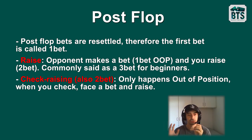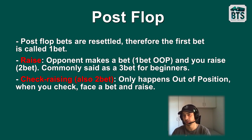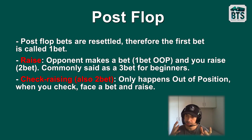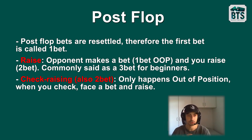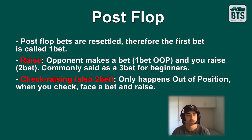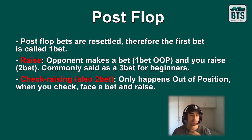Then there's check-raising, which is the same as raising but out of position — you can't check-raise in position. For example, the big blind versus button: he c-bets the flop, you check to him, and then you have the opportunity to go for a check-raise. This is also called a two-bet, as it's the second bet happening postflop. It only happens out of position when you check, face a bet, and then raise.